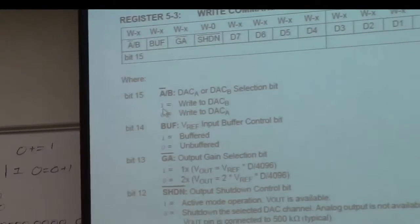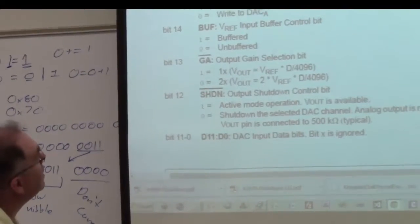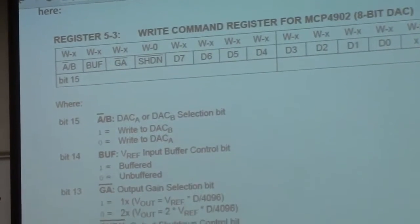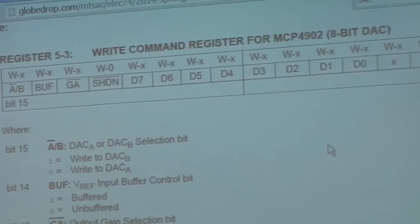And then the next eight are our data. D7 through D0. And then the last four don't care. It's like if 0 is 1, it doesn't matter.